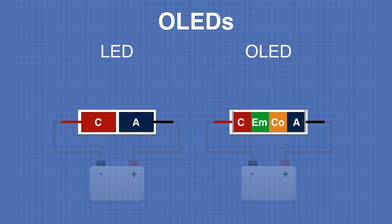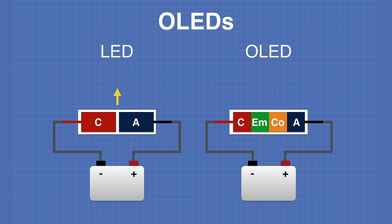When current is applied to a standard LED, electrons travel between the anode and the cathode. As they cross the gap, light is emitted. In an OLED the electrons travel through the layers, and the emissive layer emits light.